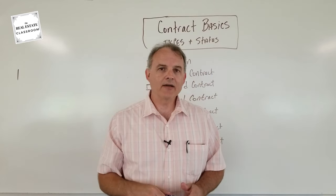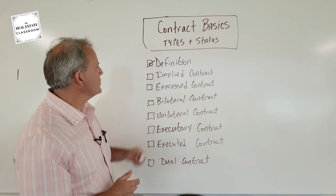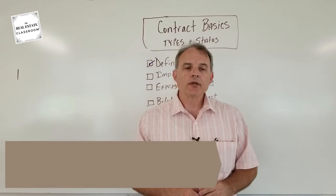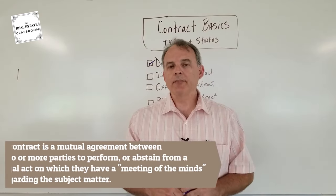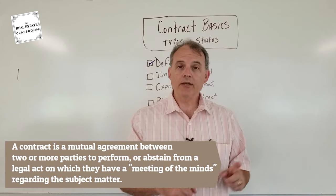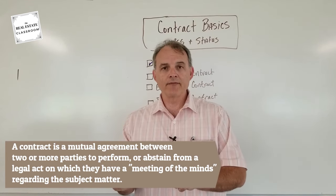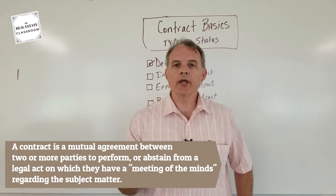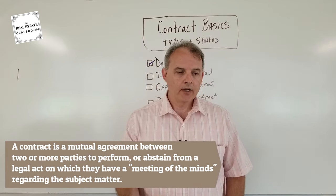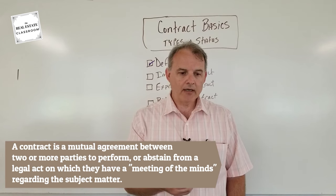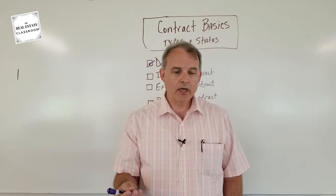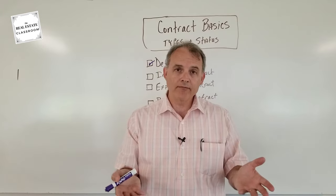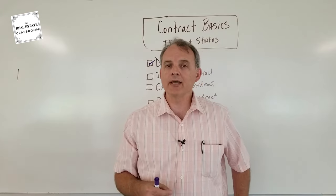The first thing we're going to talk about is the definition of a contract. The definition is pretty simple — it's a voluntary agreement between two or more parties to either perform or not perform, and they come to a meeting of the minds regarding the subject matter. That means the buyer and seller agree that once the purchase contract is agreed to, both parties are going to perform and follow through with what they said.